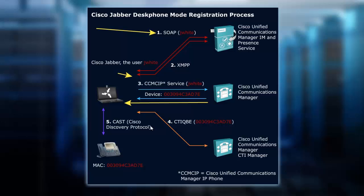That's when CTI QBE — which stands for Computer Telephony Integration Quick Buffer Encoding — is used to communicate between Communications Manager and the Jabber client, indicating that it wants to use desk phone mode. Then CAST is used down to the phone to control it.